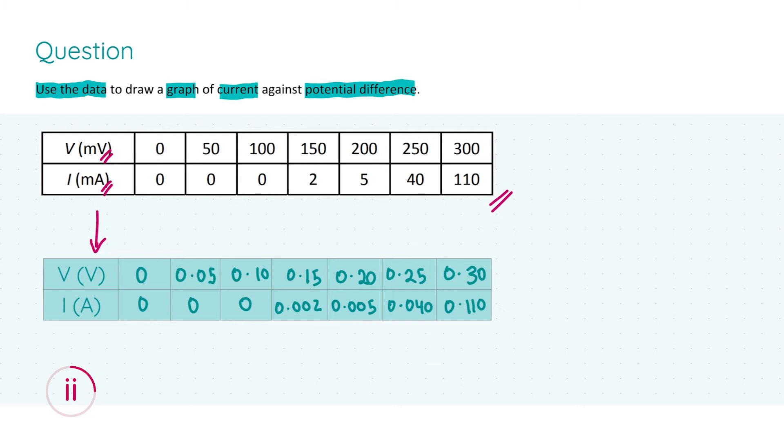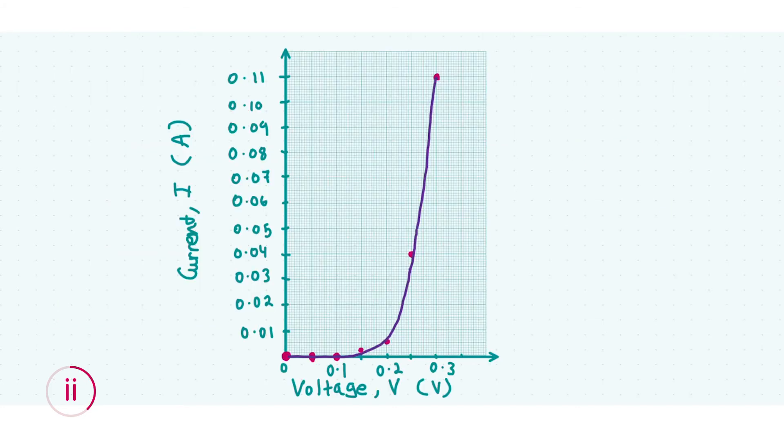The question asks you to plot a graph of current versus potential difference V. Because the current is dependent on the voltage, we're going to have our y values as I and our x values as the voltage values. Here's the graph I've drawn, and I've plotted all of the correct points in this magenta color, which will get you three marks. You'll also get three marks for correctly labeling your axes—that includes the variable symbol, its unit, and correct scaling of the axis.